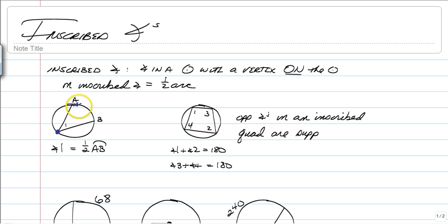The measure of the arc that it is creating is going to be twice the angle, or the angle is going to be half the arc, either way you want to think about it. The angle in this one, angle 1, is going to be half the measure of arc AB. So if AB was 100, then angle 1 would be 50. That's going to work out all the time.